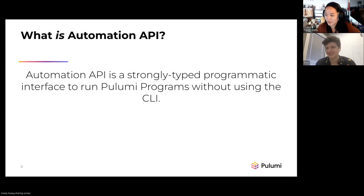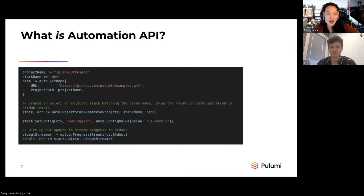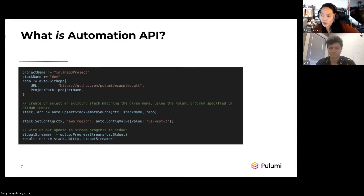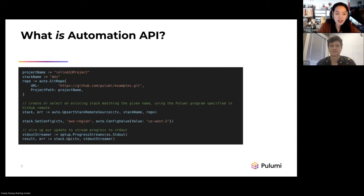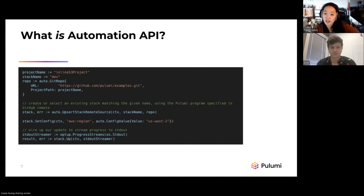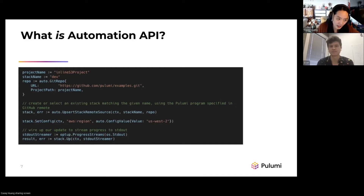Here is a super simple skeleton of what Automation API usage looks like at its core. We're setting up a new Pulumi program, defining our project name, stack name, and Pulumi source code living in a GitHub repo. Then we have this method — upsert stack remote source — where we either create the stack if it doesn't exist or select it. Remote source means the repo actually lives remotely in a GitHub repo. Automation API also supports having your source code live locally on a local workspace folder or even inline in the program itself. After selecting our stack, we can dynamically set configuration and manage pulumi up with stack.up at the very bottom.